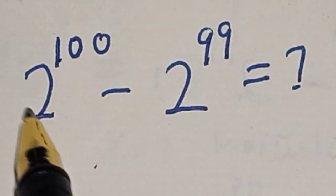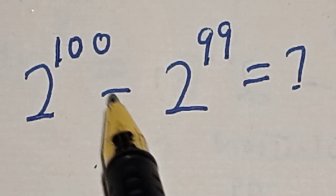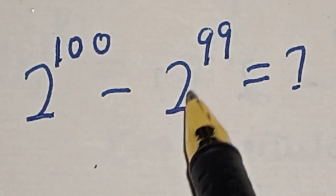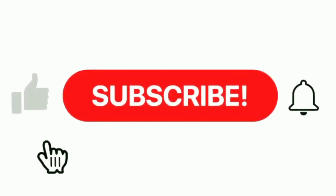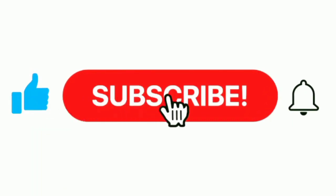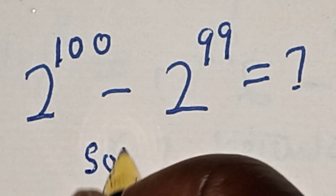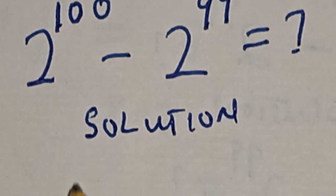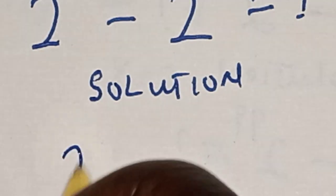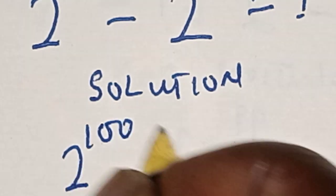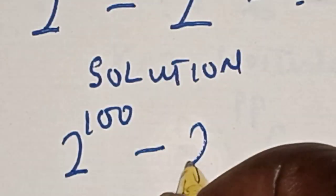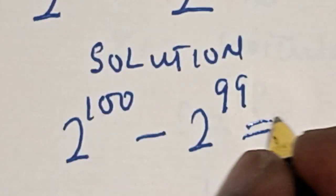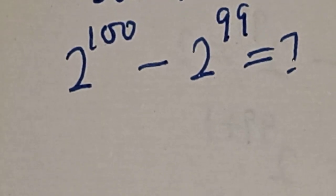Hello, welcome to Math Gist. In this class, we want to evaluate this math problem: 2 raised to power 100 minus 2 raised to power 99 is equal to what. Like, share, comment and subscribe. The given question is 2 raised to power 100 minus 2 raised to power 99. Let's see.